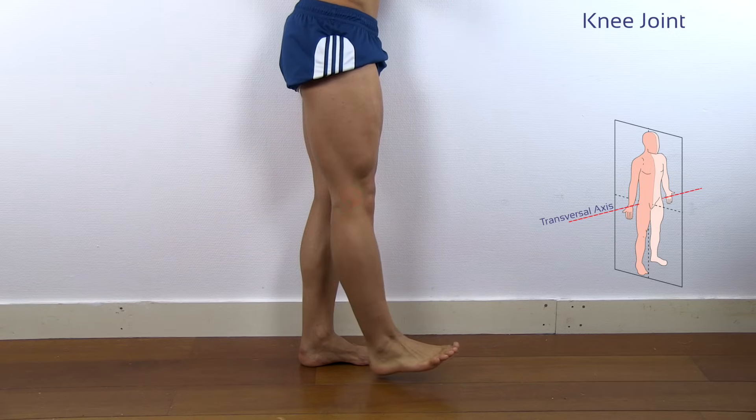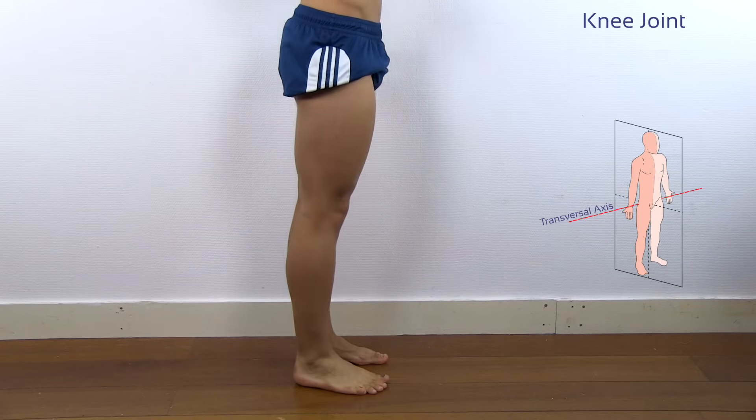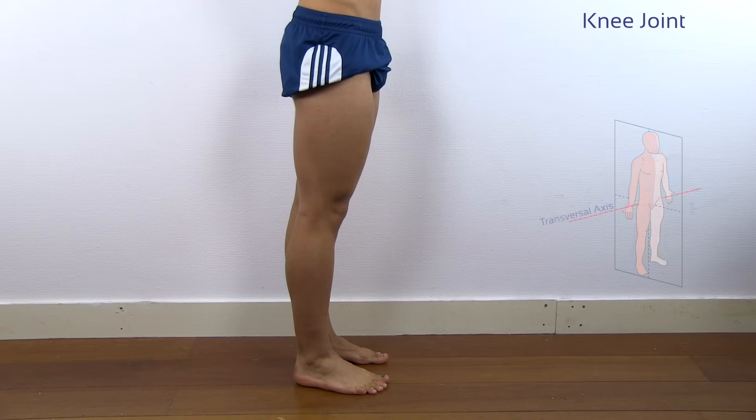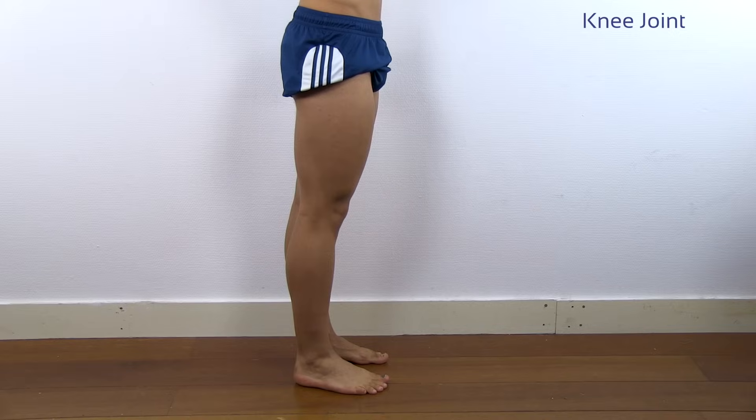As we have learned, these movements only take place in the sagittal plane around the transversal axis. We will neglect the minimal amount of internal and external rotation in the transversal plane as well as abduction and adduction in the frontal plane.